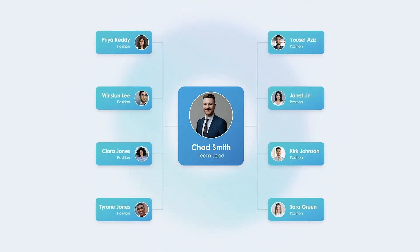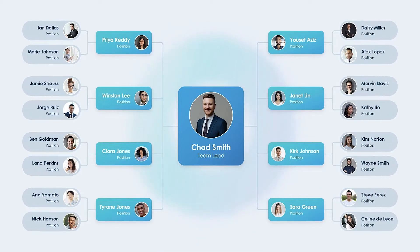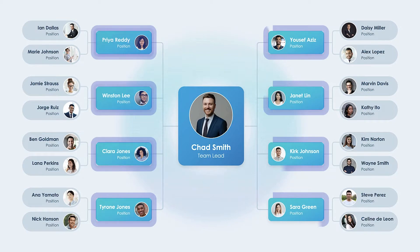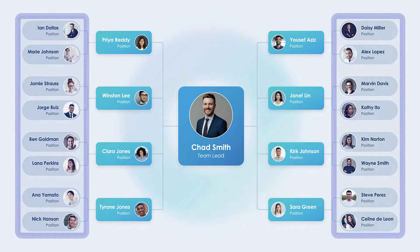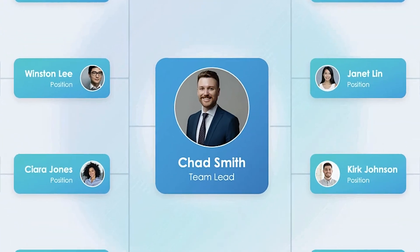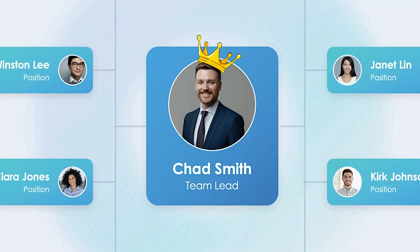Traditionally, when people think of an org chart, they think of a tree shape that branches out to show a team's hierarchy. This visualization branches out from the center to fit more information on a single slide. The light blue branches are the executive team — probably the lead of their respective team or department — and could also be customized with department names, leads, and reports underneath. And of course, in the middle, we have our fearless leader, Chad.